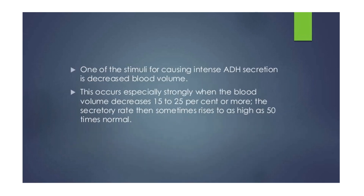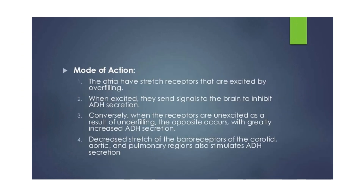One stimulus that causes intense ADH secretion is decreased blood volume. Intense ADH secretion occurs when blood volume decreases by 15 to 25 percent or more, and the secretory rate can rise to as high as 50 times normal. The atria have stretch receptors that, when excited by overfilling, send signals to the brain to inhibit ADH secretion. When under-filled, the opposite occurs with greatly increased ADH secretion. Decreased stretch of baroreceptors in the carotid, aortic, and pulmonary regions also stimulates ADH secretion.